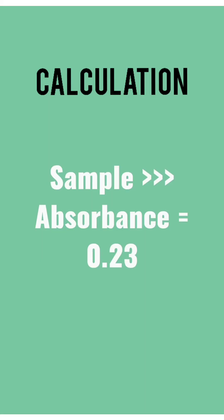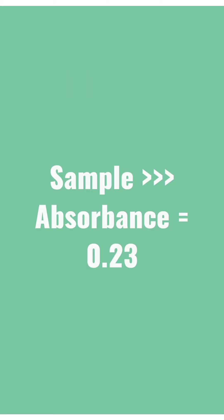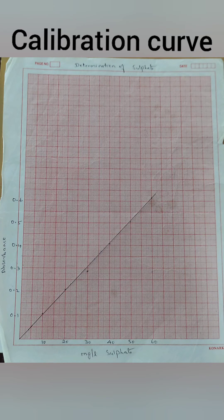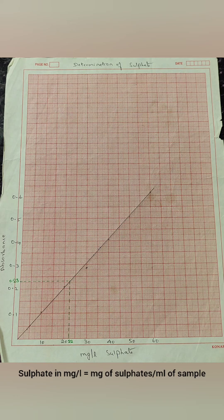We get the absorbance of the sample as 0.23. Measuring the sulfate content from the calibration curve, we get the sulfate content as 22 mg per liter.